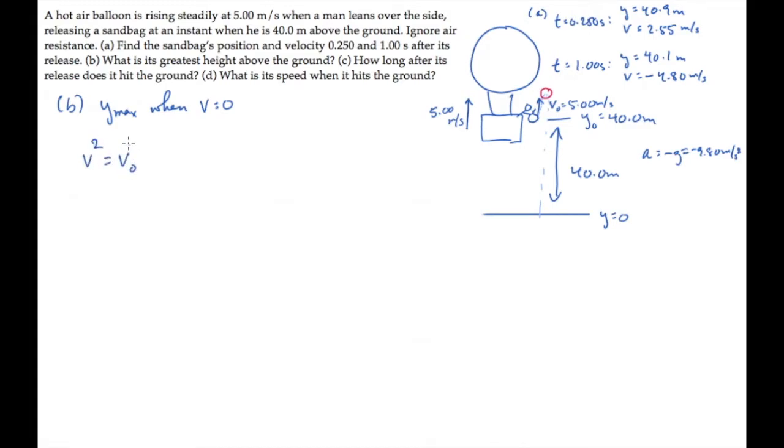The easiest way to find that height is using the time-independent kinematic equation. When the velocity is zero, the height is the maximum height. Rearrange this equation, solving it for ymax. And you get this.